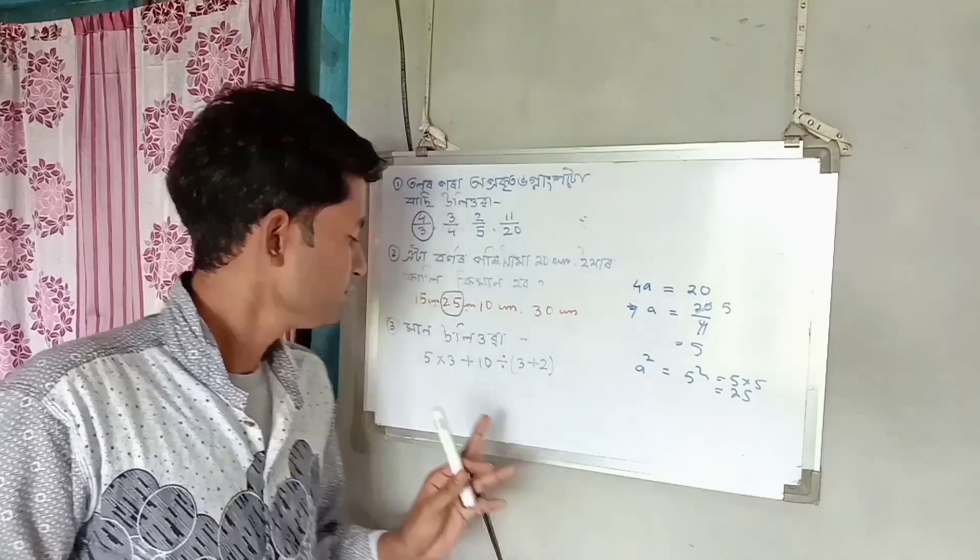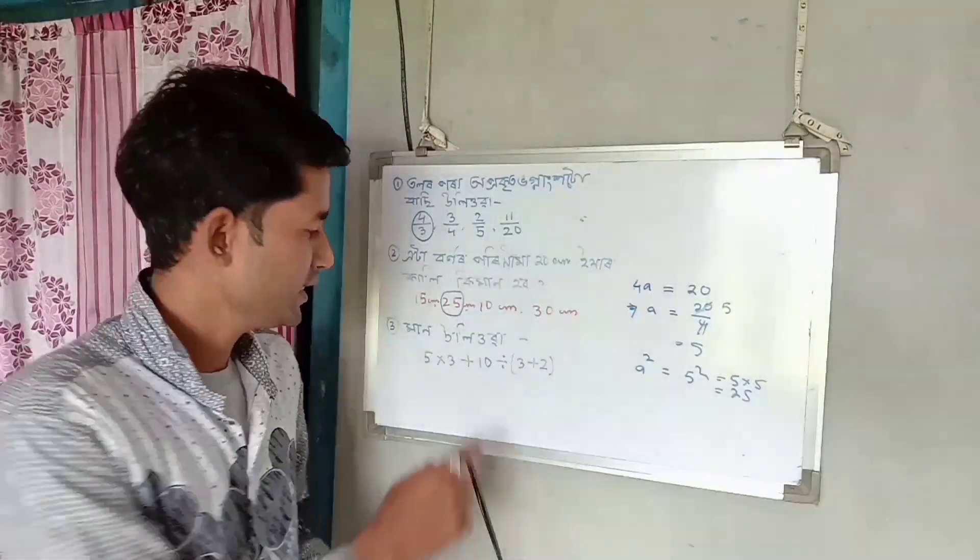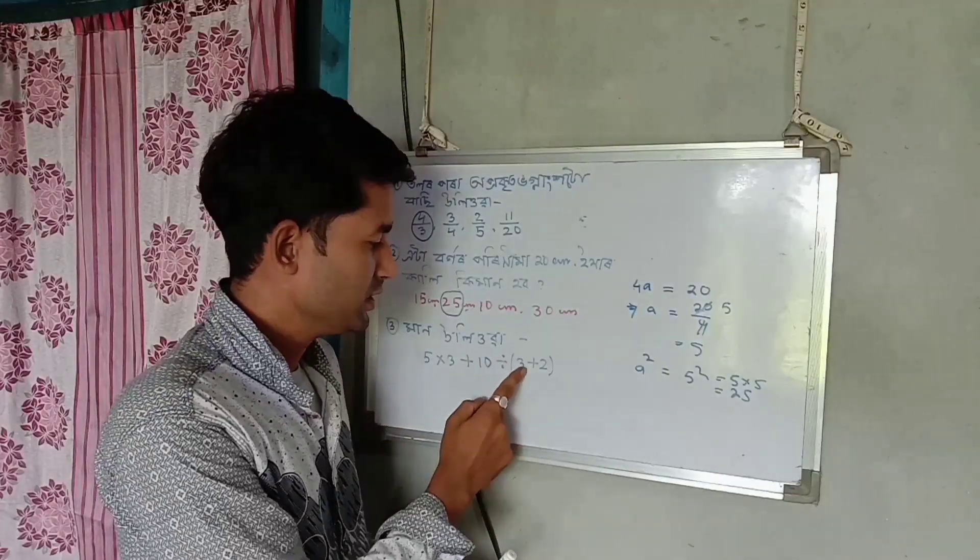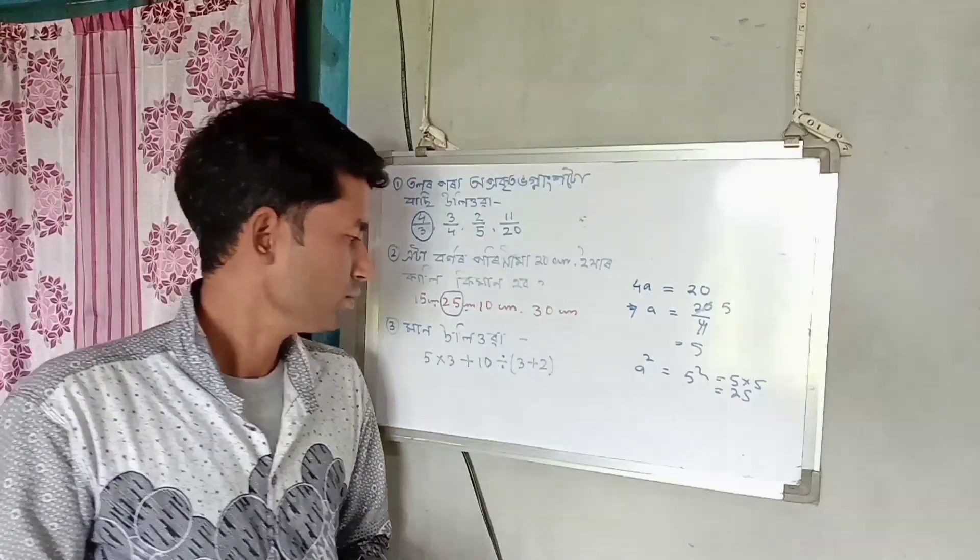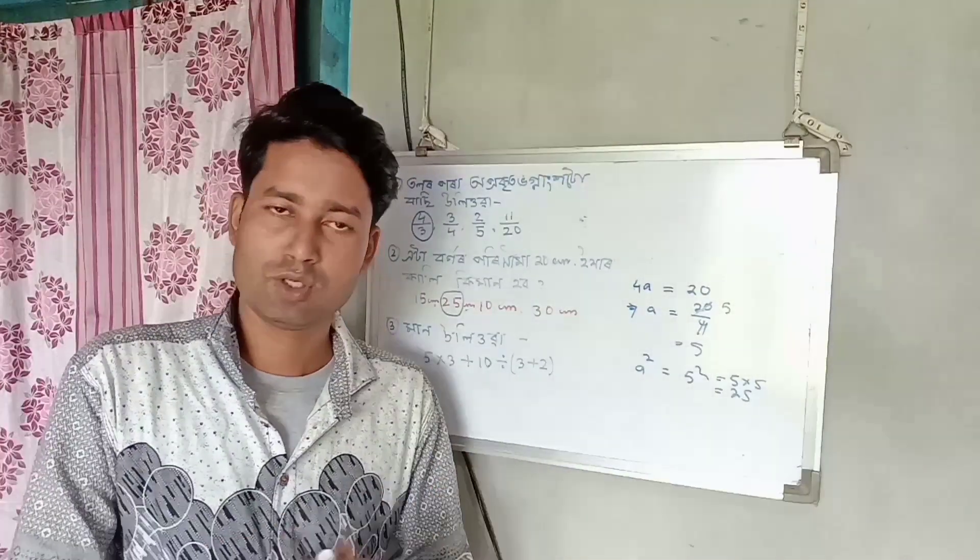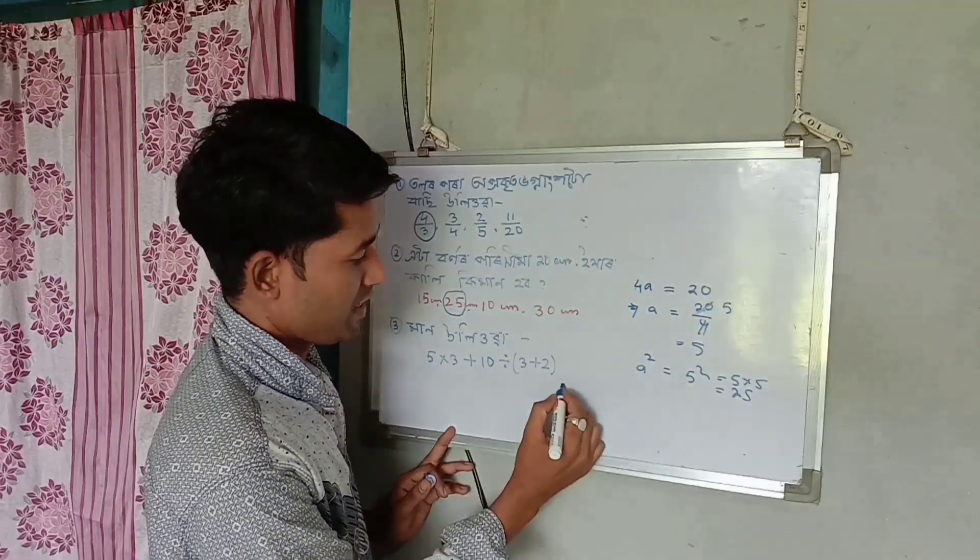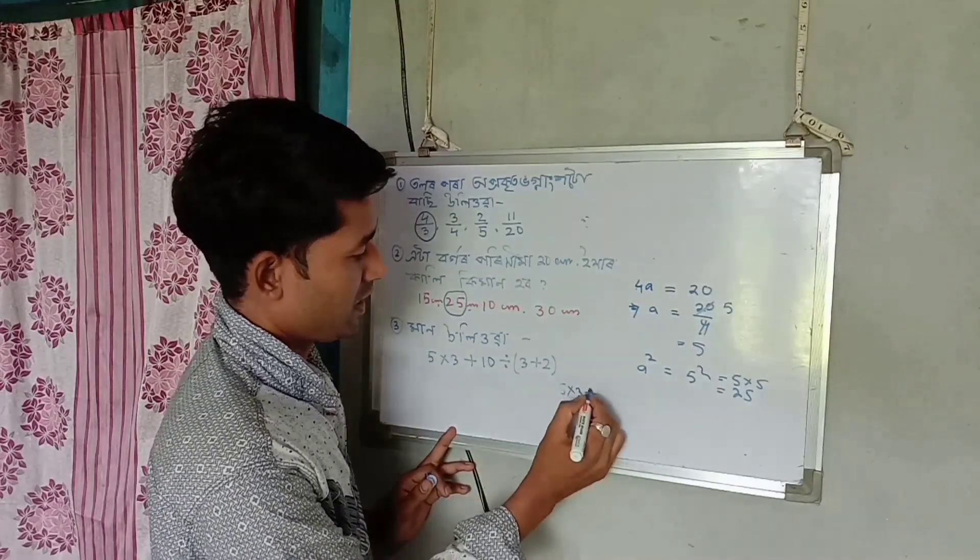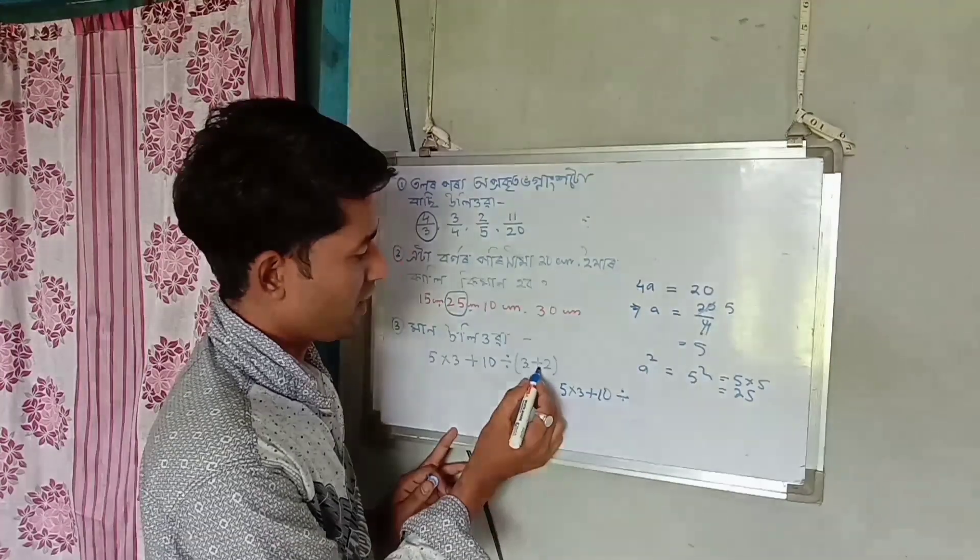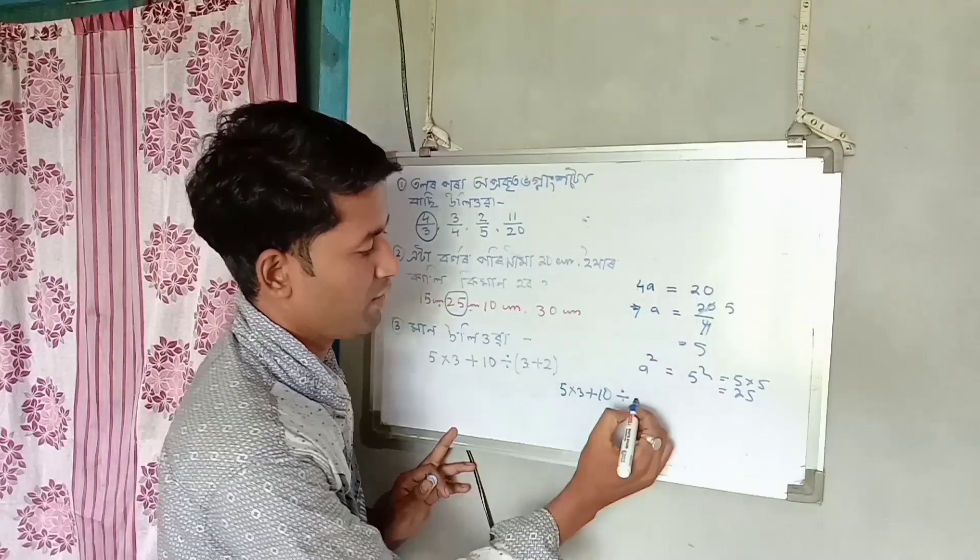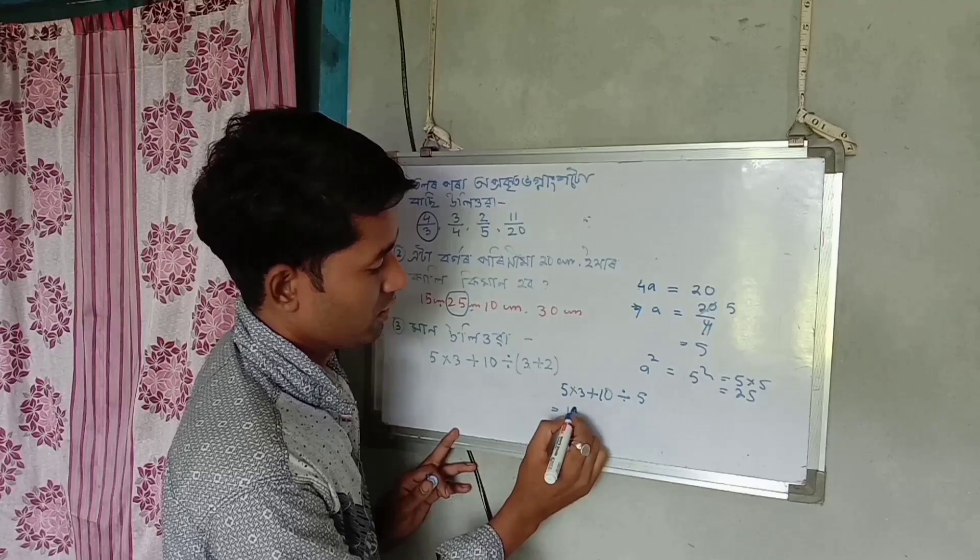The next question asks us to solve: 5 into 3 plus 10 divide 3 plus 2. We apply the BODMAS rule. First, we have to solve what's in the brackets. So 3 plus 2 equals 5. Then we have 5 into 3, which equals 15.